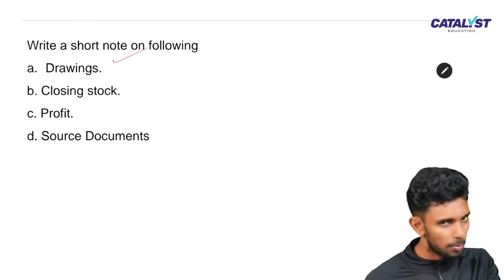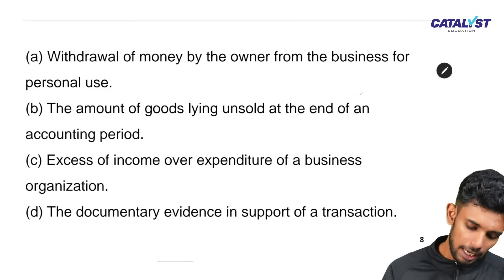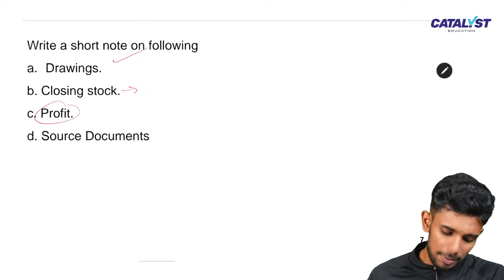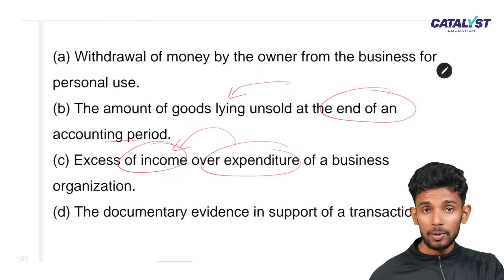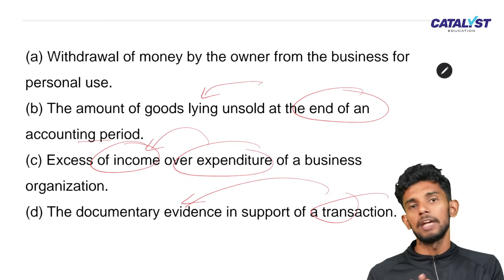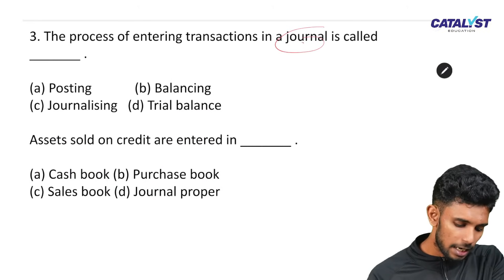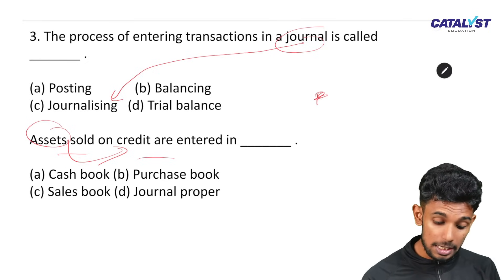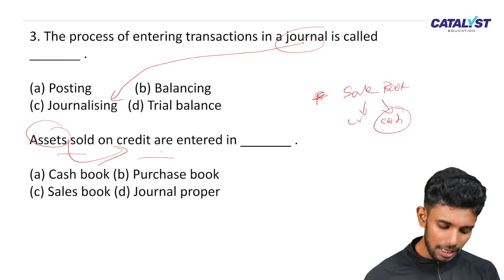We have to write short notes on the following topics. Closing stock is the unsold stock remaining at the end of an accounting period. A source document is evidence of a transaction — it is documentary evidence that supports the transaction. For example, a bill or invoice. When an asset is sold on credit, it is recorded in the journal proper — it is not recorded in the cash book or the sales book.